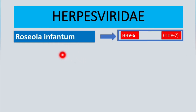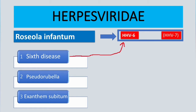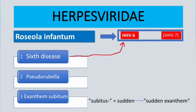Roseola infantum goes by three other names: number one, sixth disease; number two, pseudorubella; and number three, exanthem subitum. To remember this — Human Herpesvirus 6 causes sixth disease. As for exanthem subitum, in Greek 'subitus' means sudden, so it refers to a sudden exanthem or sudden rash that appears after high fever, as we will see in a moment.